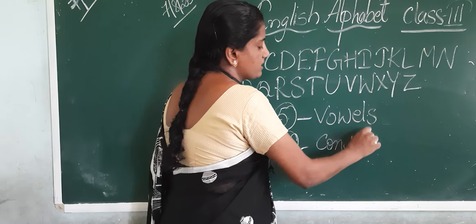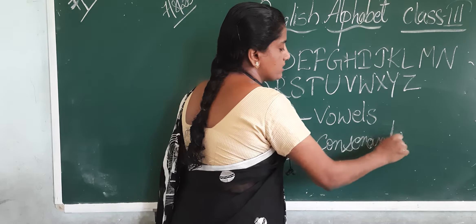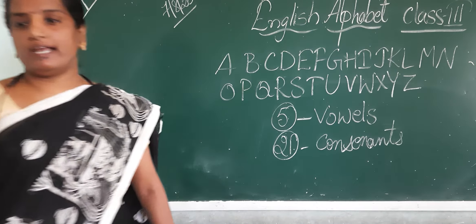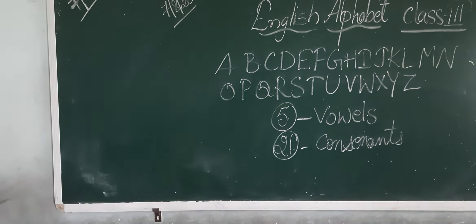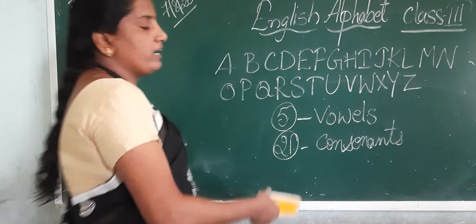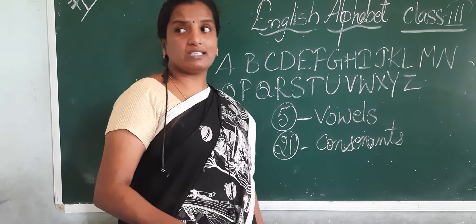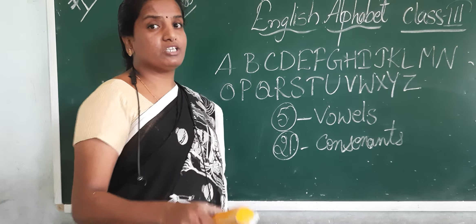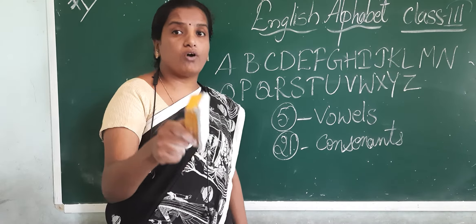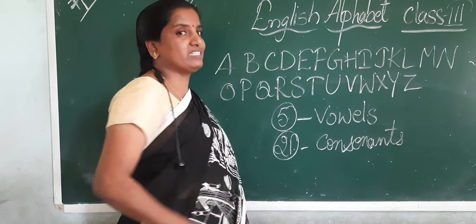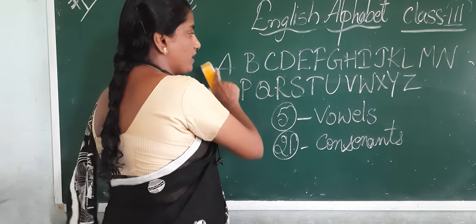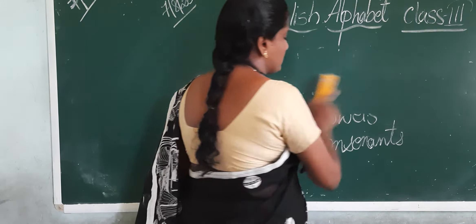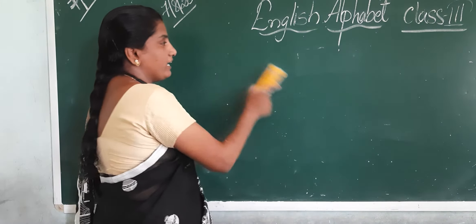In these 26 letters, children, we have divided them into two parts — one is vowel and another is consonant. No word is formed without these vowels. We have discussed about that. Let us have a look again.